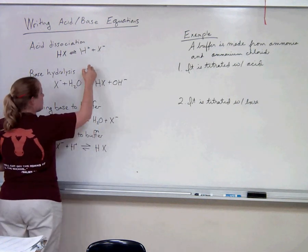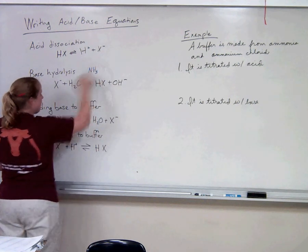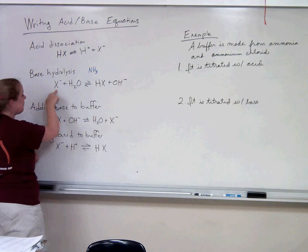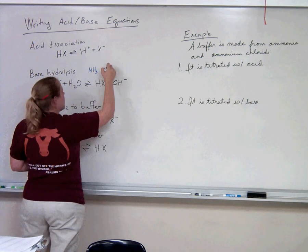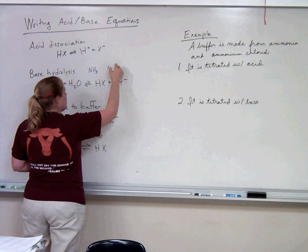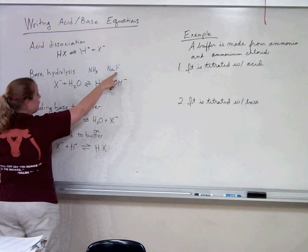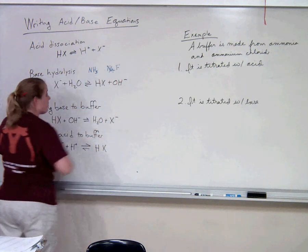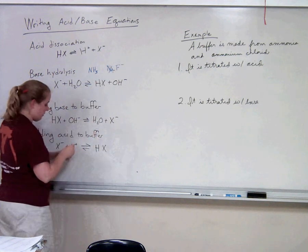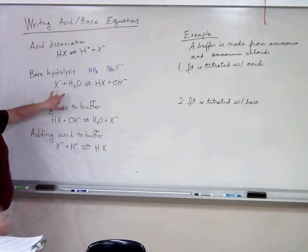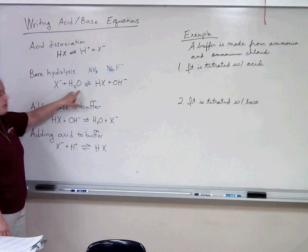You're going to have some kind of base. This will probably be something that starts off as a salt. Let's say we had sodium fluoride. We're just looking at the fluoride, we don't want the sodium part. So then we get fluoride negative. So we'll have whatever our base is, and then we'll add water to it.